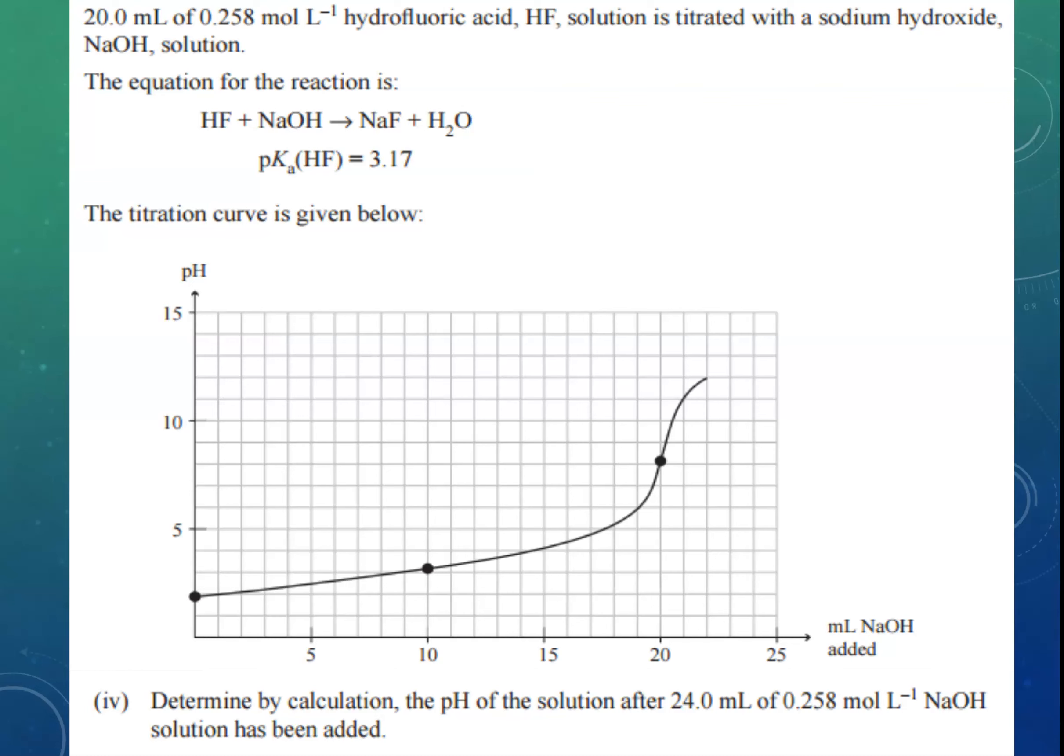Now, if you look at this graph, you can see that there isn't anything here at 24 mL. But you can have a look at the trend, and you're going to say, well, the pH has got to be greater than 12. Now, I like to do that at the start, just so that I've got in my head roughly what the answer should be.